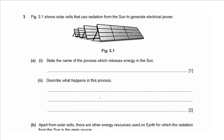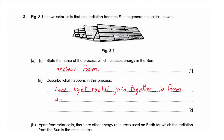Question 3 refers to figure 3.1 showing solar cells that use radiation from the sun to generate electrical power. Part ai: state the name of the process which releases energy in the sun — that is nuclear fusion, occurring in all stars. Part ii: describe what happens — two light nuclei join together to form a heavier nucleus and release energy from the reaction.